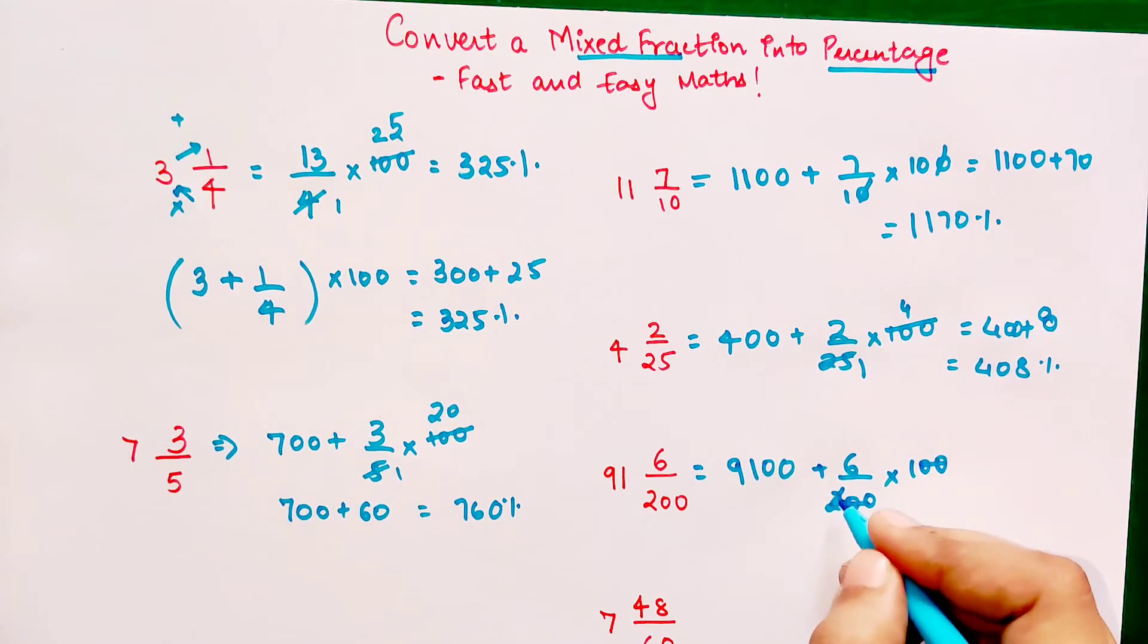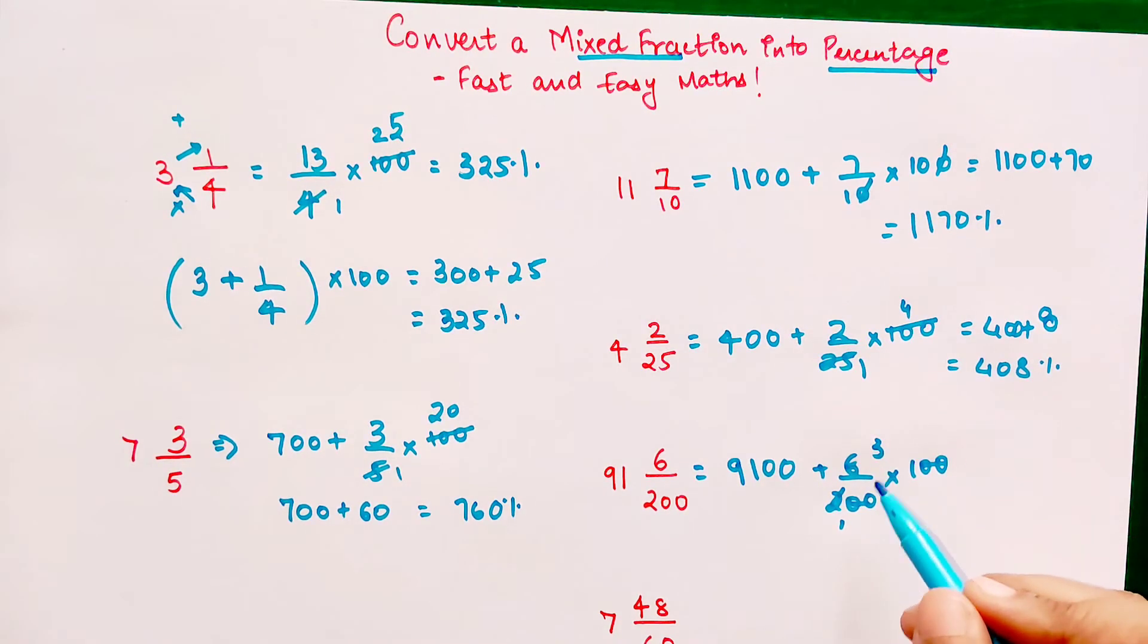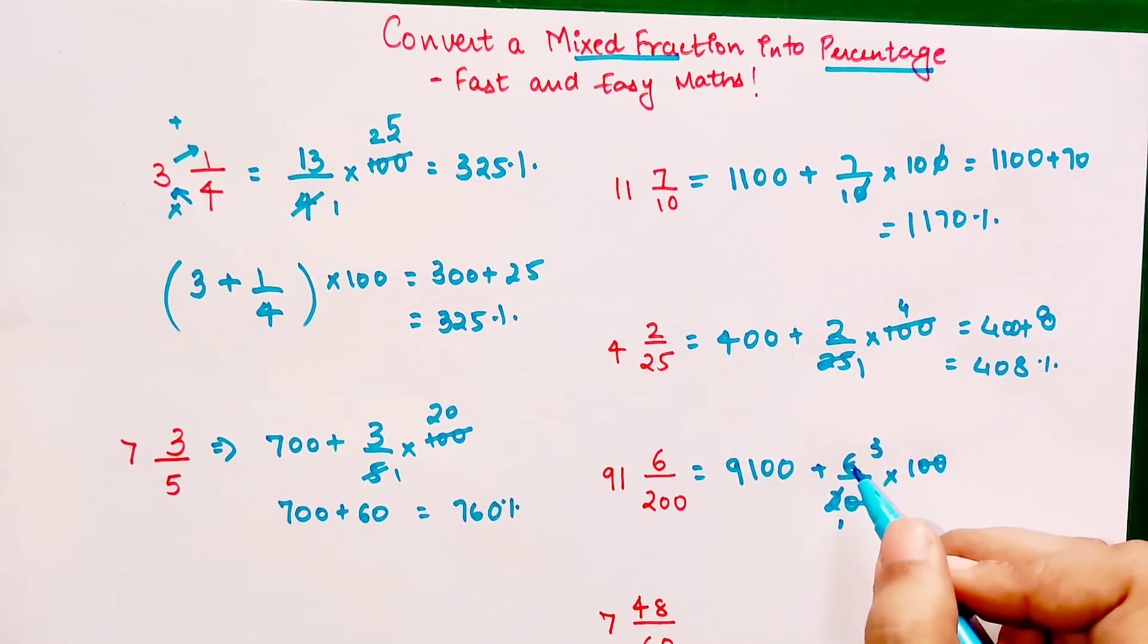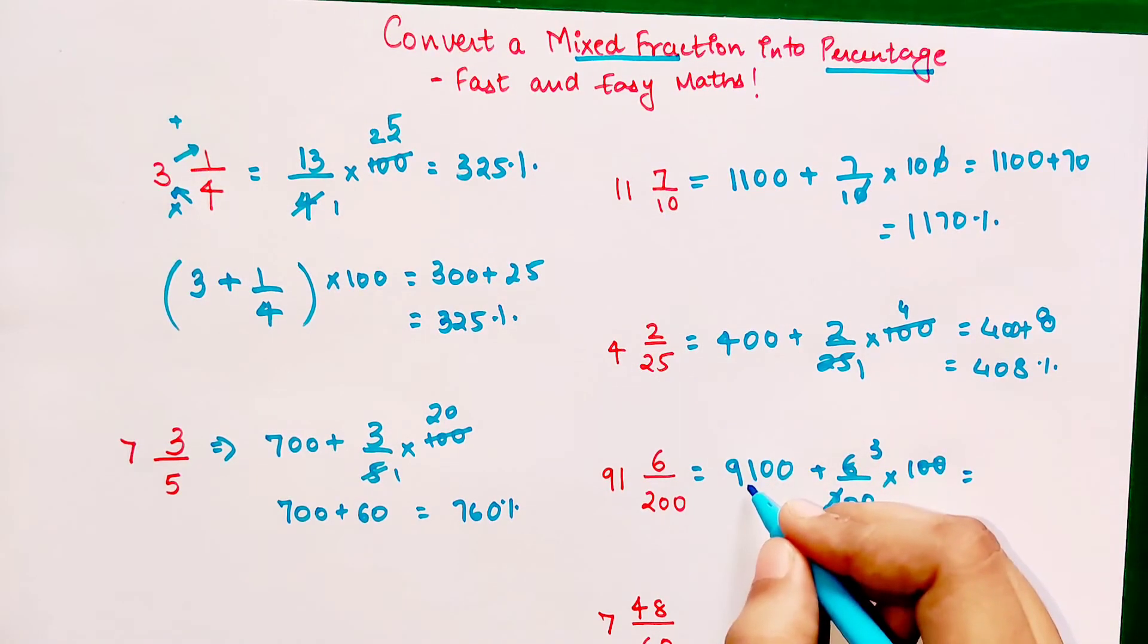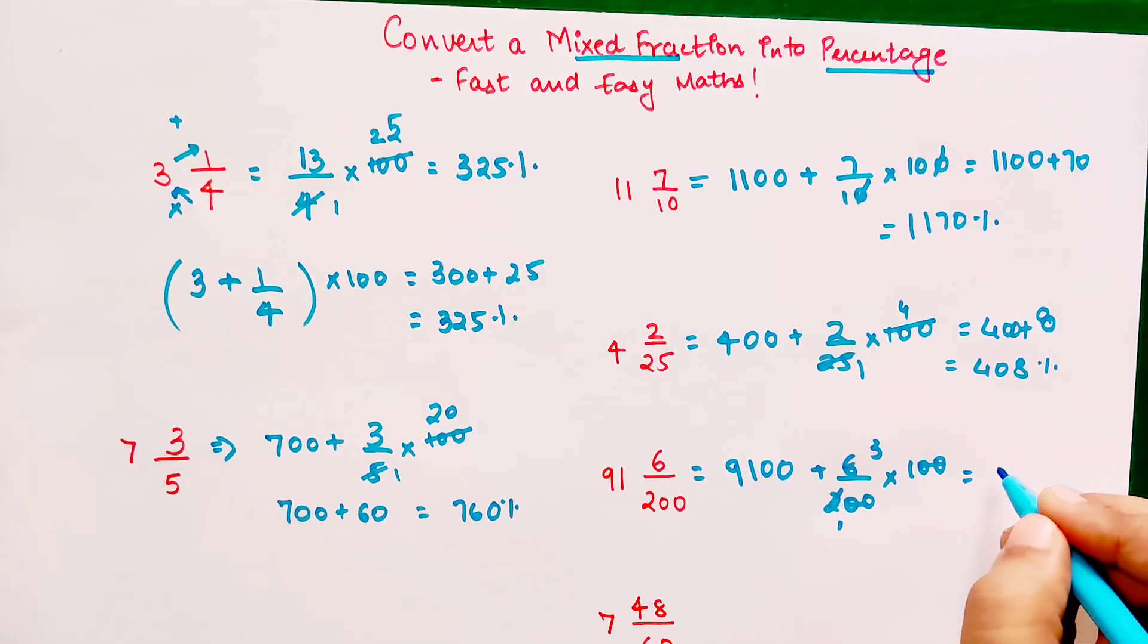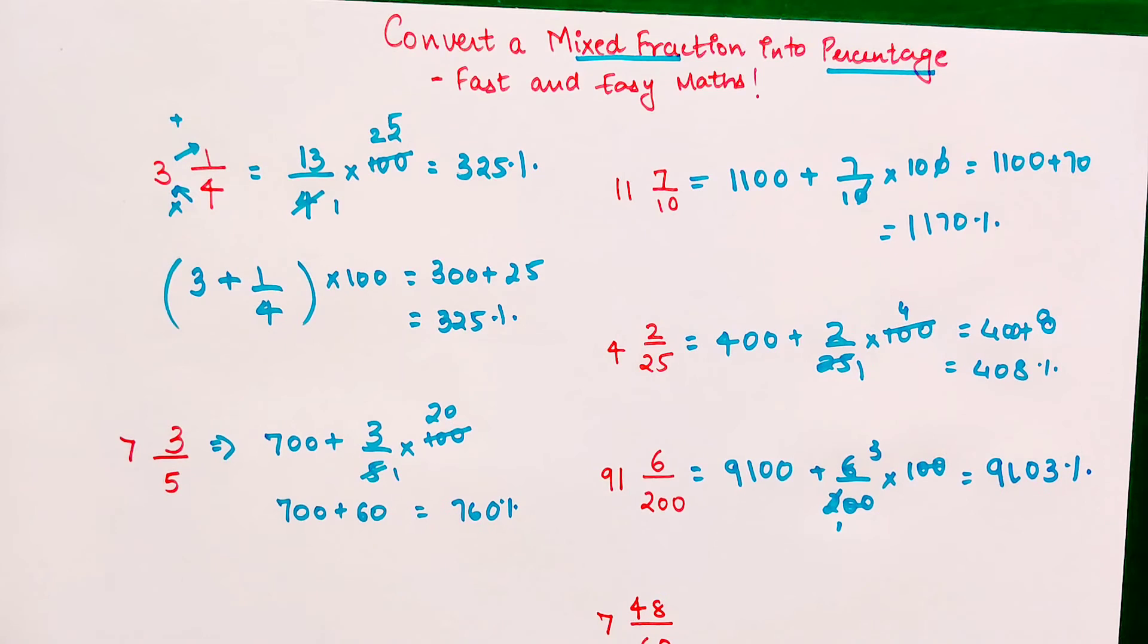The zeros are cancelling, 2 ones are and threes are. Understand, whenever you're coming across a fraction which is getting multiplied, the first thing you need to do is reduce your fraction. You cannot keep 6 upon 2 as is, because if you do that you'll land up into the whole process of taking LCM and all that, and that's just going to make it very tricky. So 9100 plus 3 is 9103 percent.